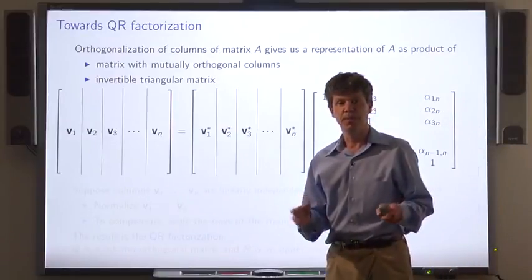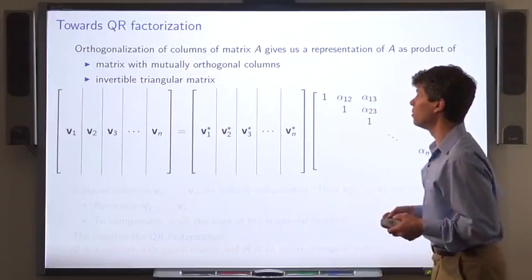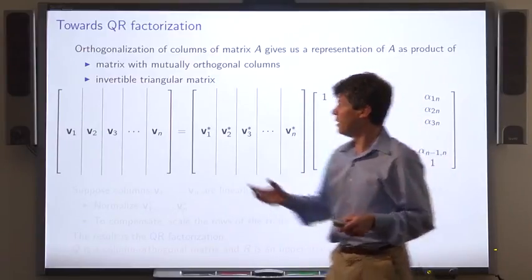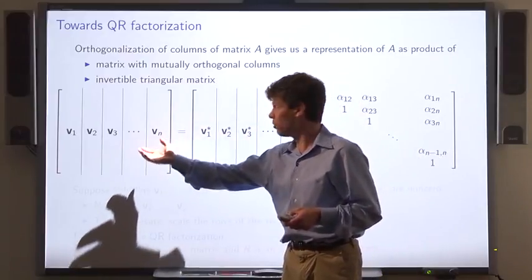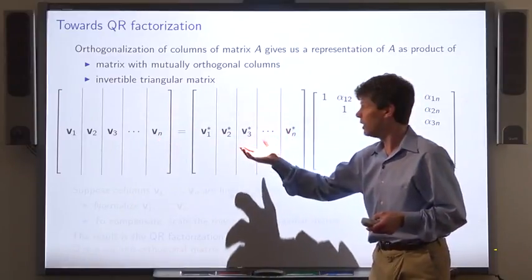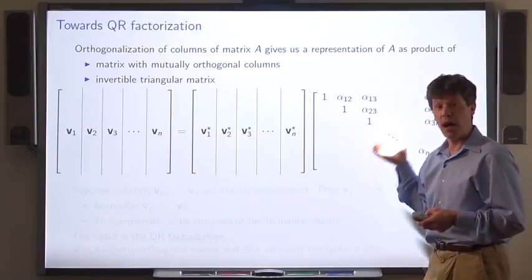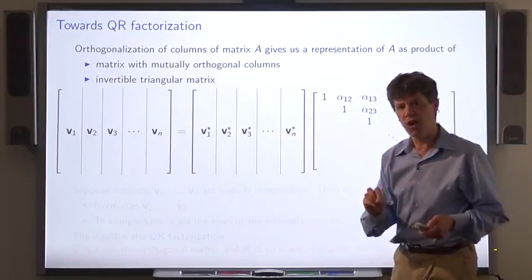Now we'll start to develop procedure for producing the QR factorization. Remember that the result of orthogonalize is this relationship. Here's the matrix whose columns are the original vectors supplied to orthogonalize. Here's the starred versions. And they're related by matrix multiplication with this upper triangular matrix.